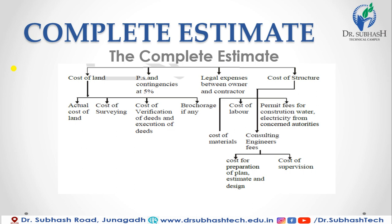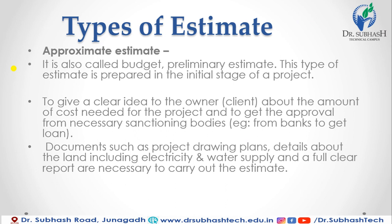In the next slide, we discuss different types of estimates. There are seven types: first is approximate estimate, also known as preliminary estimate; second is detailed estimate; third is quantity estimate; fourth is revised estimate; fifth is supplementary estimate; sixth is supplementary and revised estimate; and seventh is annual repair or maintenance estimate, abbreviated as A.M. or A.R. estimate.